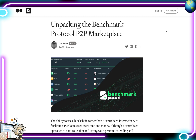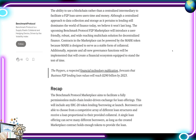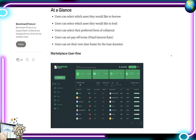Sliding over to their Medium page, there's an update announced on June 25th: unpacking the Benchmark Protocol P2P marketplace. They explained that the ability to use a blockchain rather than a centralized intermediary to facilitate a P2P loan saves users time and money. Although a centralized approach to lending still dominates finance today, they believe it won't last long. The upcoming Benchmark Protocol P2P marketplace will introduce a user-friendly, robust, and wide-reaching multi-chain solution for decentralized finance. Contracts in the marketplace can be powered by the MARK token, and separate new governance functions will be implemented to create a financial ecosystem equipped to stand the test of time.